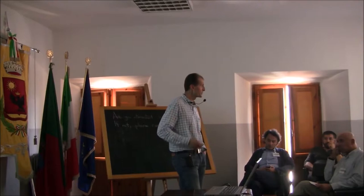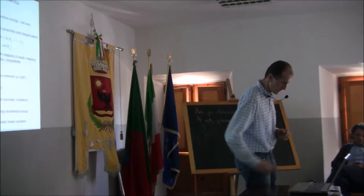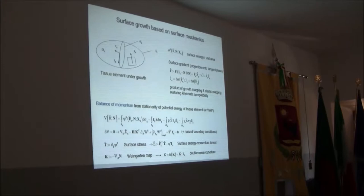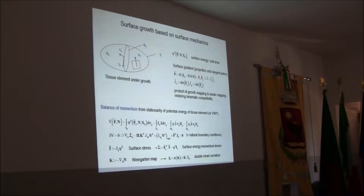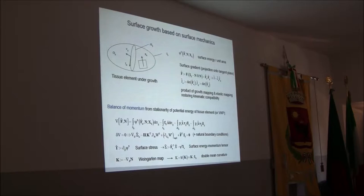It will be the surface density of the mineral phase, hydroxyapatite. We start from the setting up of a surface free energy density — energy per unit area. This Ψ_S could depend on F̃, but also on the normal, based on the belief that there could be curvature effects on growth, and possibly on material points because growth is heterogeneous by nature. This is a kinematic decomposition which is recalled, from which we derive the balance of momentum.